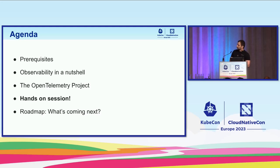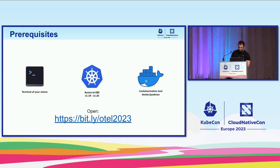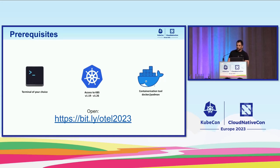First we will quickly wrap up what observability is, then continue with the OpenTelemetry project, and then start with the tutorial. The prerequisites: to participate, you need a terminal, access to a Kubernetes cluster, and Docker to run some containers. If you don't have access to a Kubernetes cluster, you can use kind — we've described in the tutorial steps how to set it up.